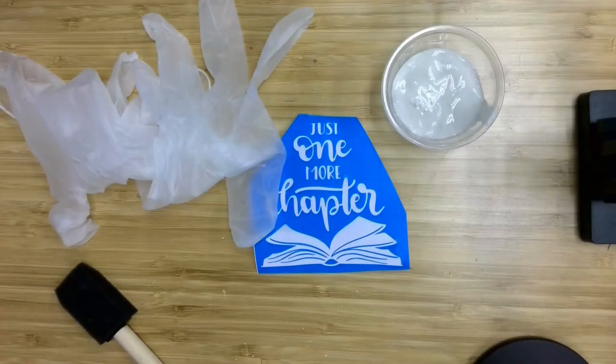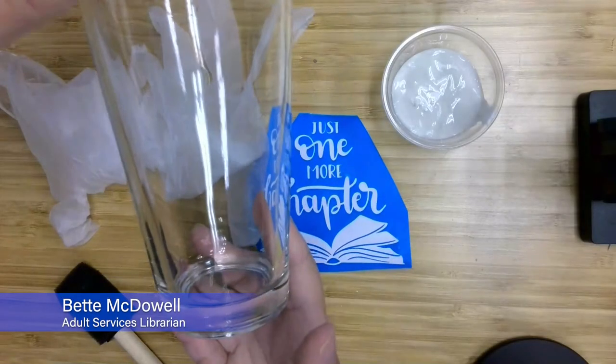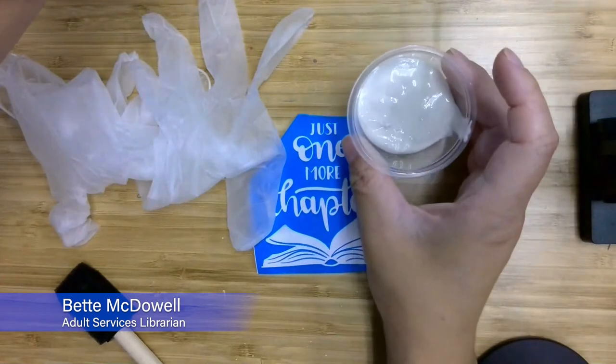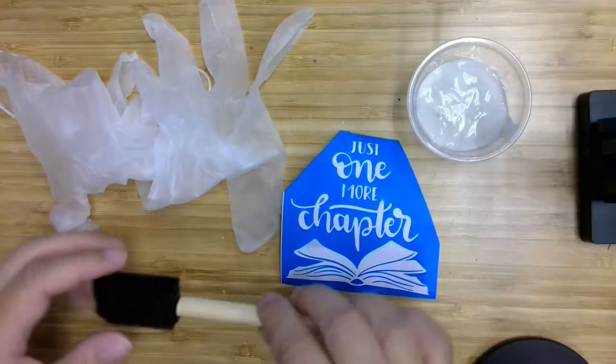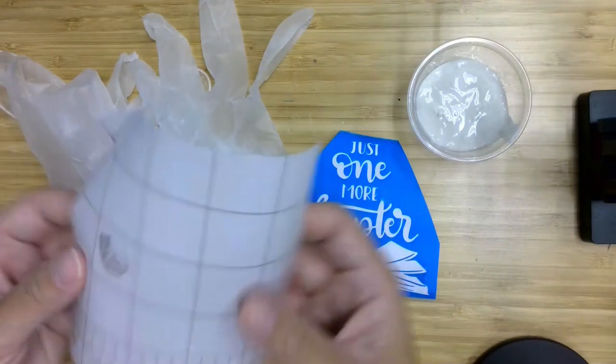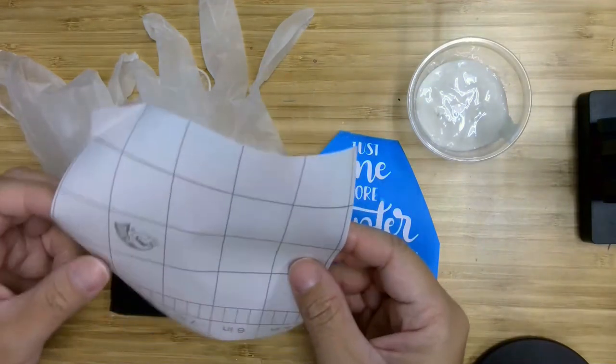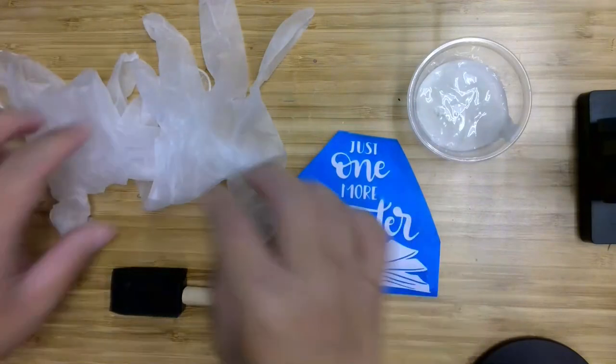Let's go over everything you have in your kit. You should have your glass, this is your etching cream, your stencil, a foam applicator, some contact paper that we're going to use to transfer this to the glass, and your gloves.